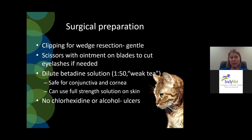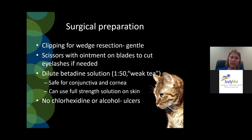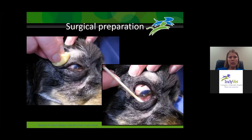Whenever you're doing eyelid surgery for eyelid masses, we need a surgical preparation. I generally clip for a wedge resection, but for cryotherapy I usually don't clip unless hair is really in the way. When clipping, you can put a little ointment on the scissors and cut the eyelashes off if needed. Never use chlorhexidine or alcohol around the eye — that will cause corneal ulceration. Always use betadine. We typically use a dilute betadine solution, about a 1-to-50 dilution — like a weak tea — which is safe for the conjunctiva and cornea. You can use full-strength solution on the surrounding skin.